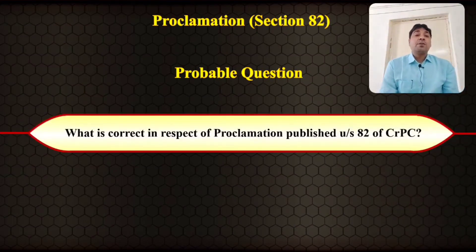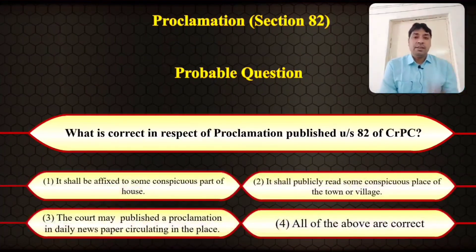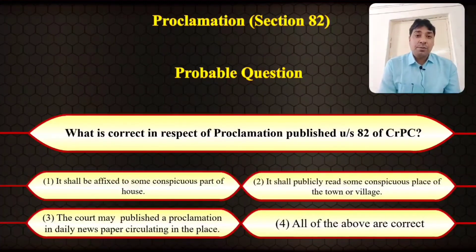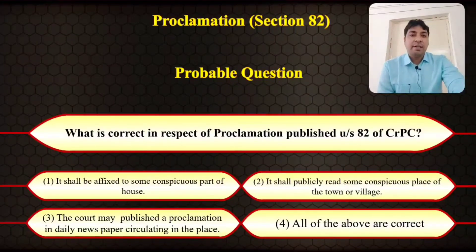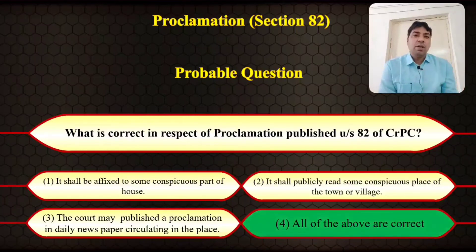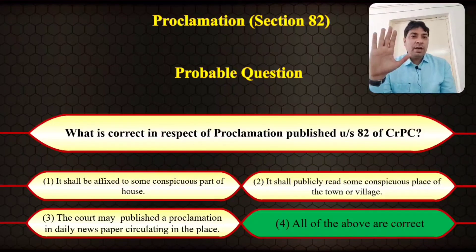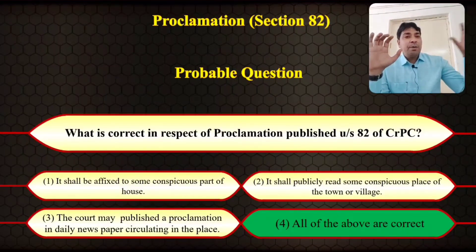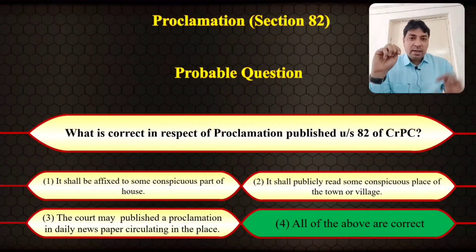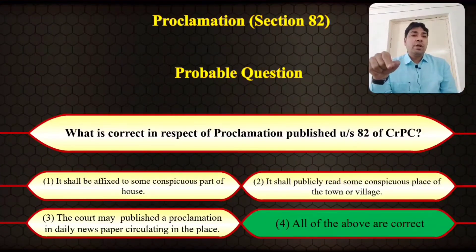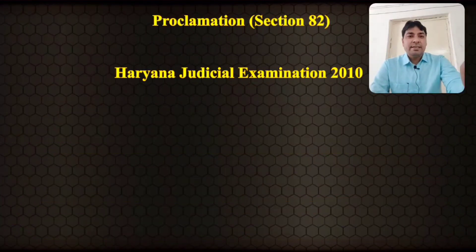Question: What is correct in respect of a proclamation published under section 82 of CrPC? Options: (1) It shall be affixed to some conspicuous part of a house. (2) It shall be publicly read at some conspicuous place of the town or village. (3) The court may publish a proclamation in a daily newspaper circulating in that place. (4) All of the above are correct. The correct answer is: All of the above are correct.